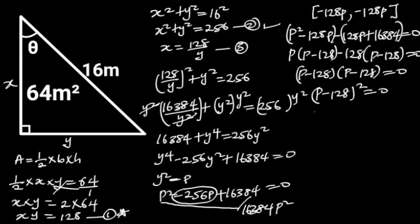Taking the square root of both sides will give us p minus 128 is equal to 0. If we take minus 128 to the right side, p will be equal to 128. Let's recall that we take y squared to be p.